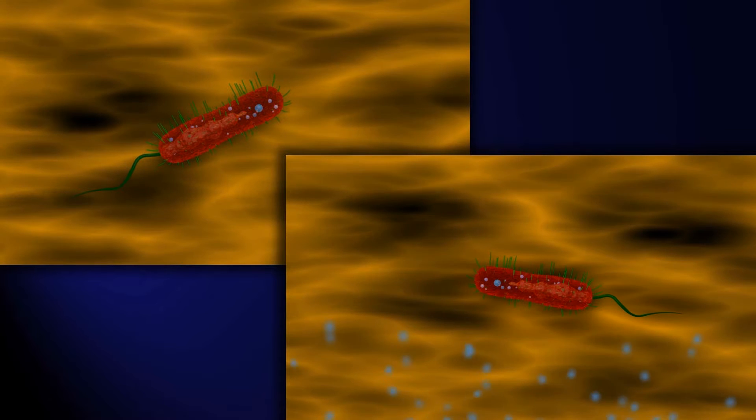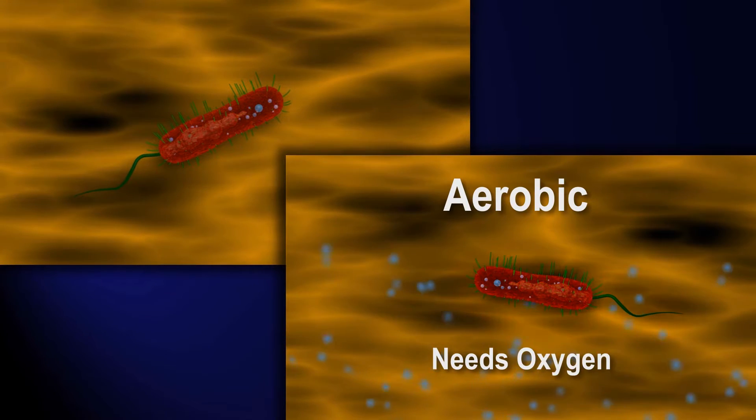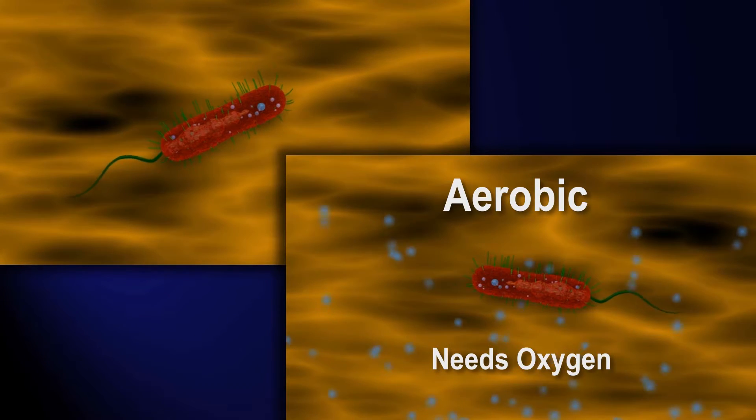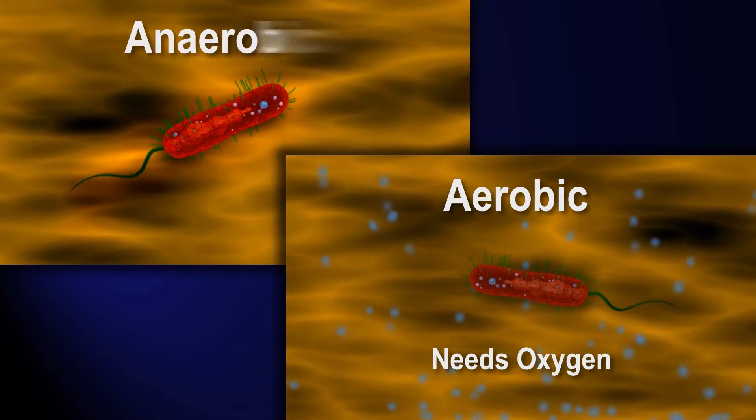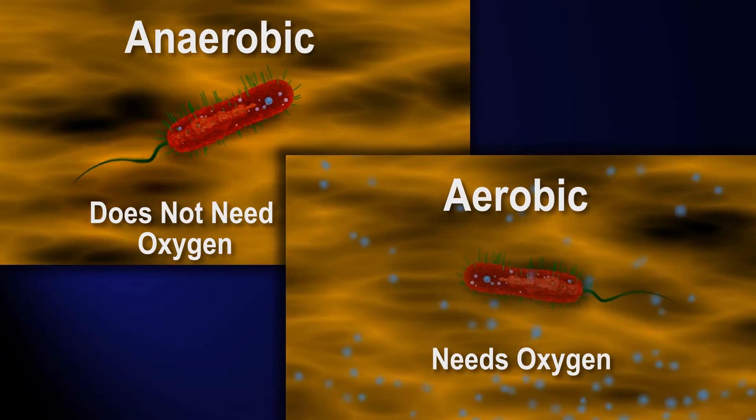Different cells have different needs. Some are aerobic — they need oxygen — while others are anaerobic and don't need oxygen.